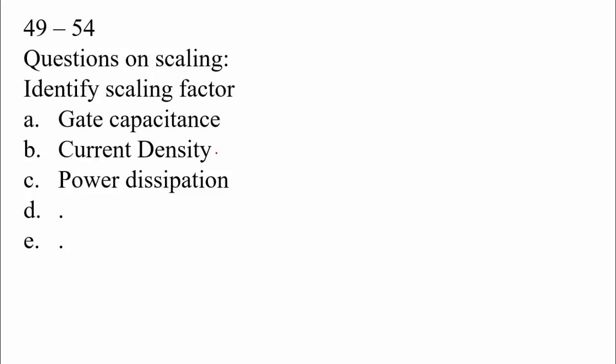C ox is nothing but epsilon A by T ox. T ox is scaled by 1 by beta. And VGS minus VTH, nothing but voltage term, is scaled by beta. Based on that, you have to solve and you have to get the expression.